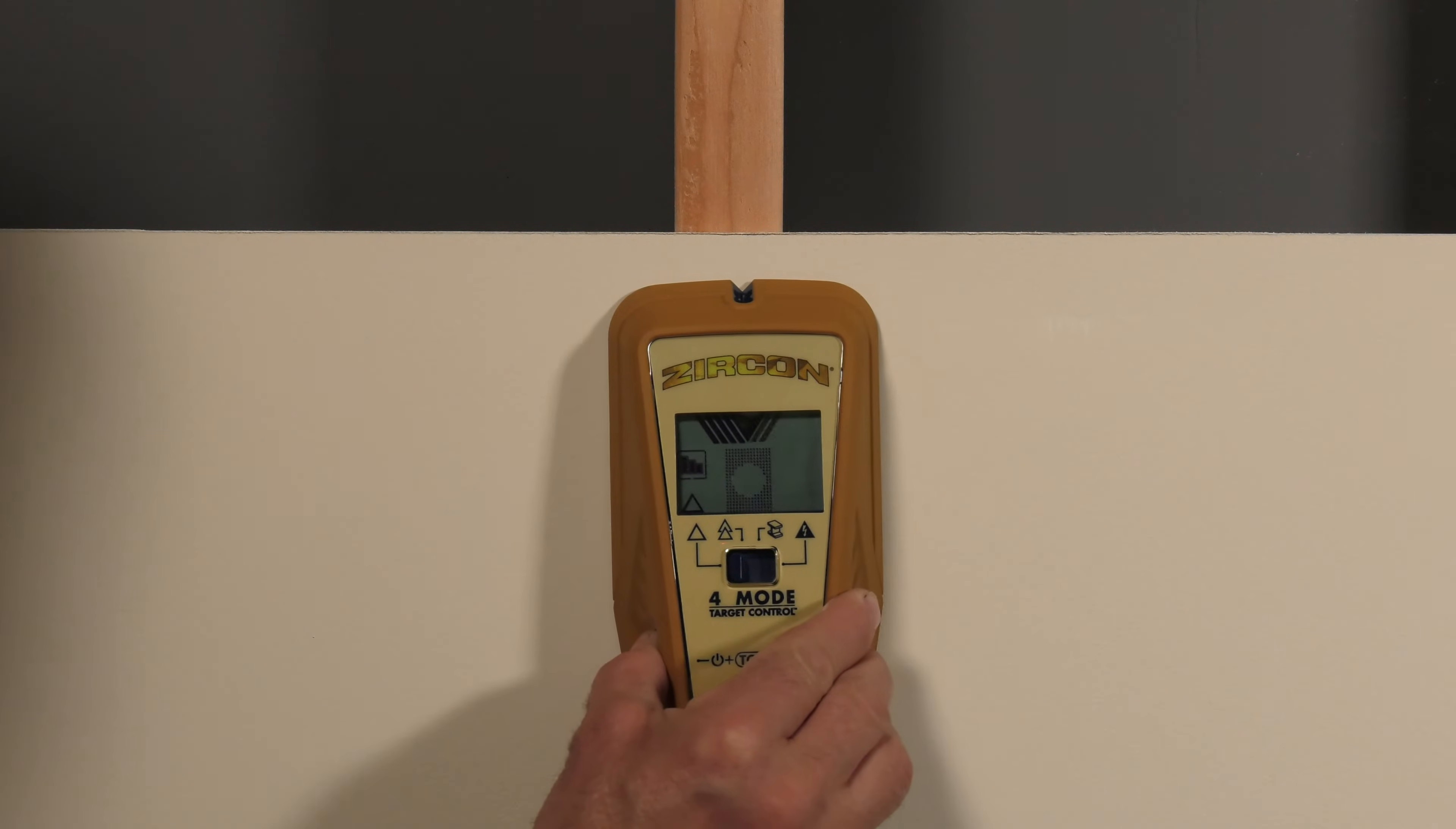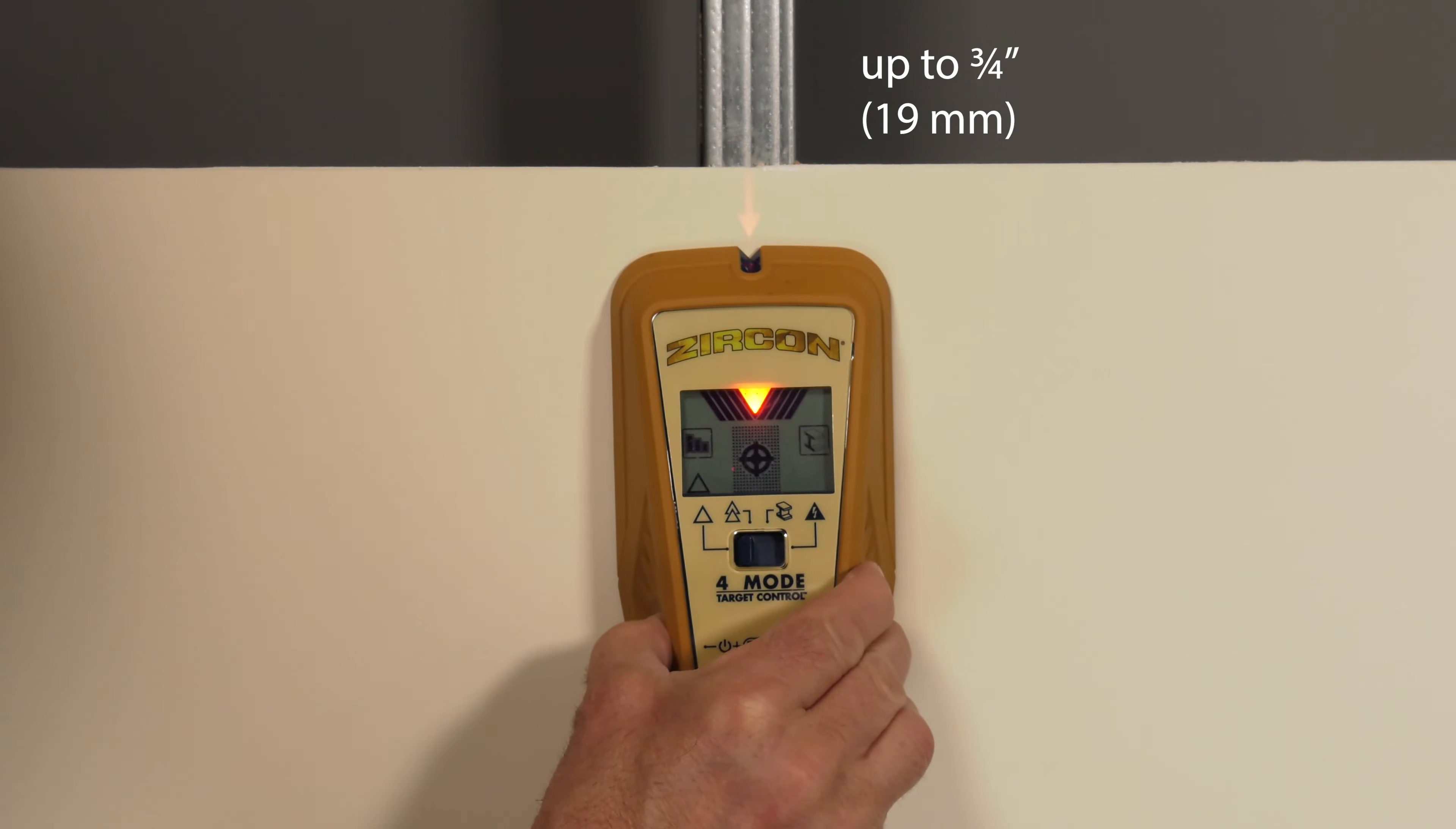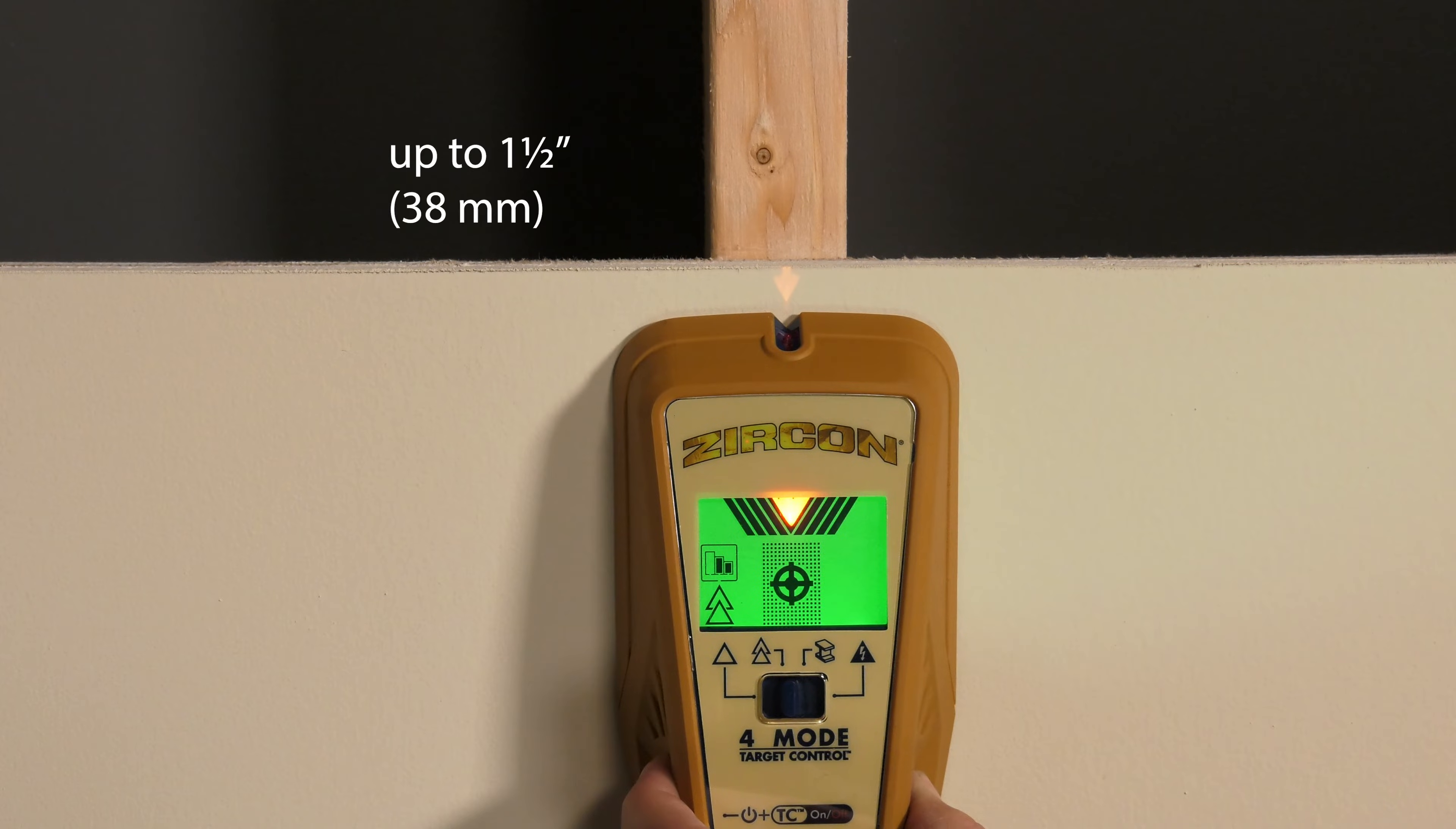StudScan to find the center and edges of both wood and metal studs, up to three-quarters of an inch deep. DeepScan to find the center and edges of wood and metal studs, double the scan depth, up to 1.5 inches deep.